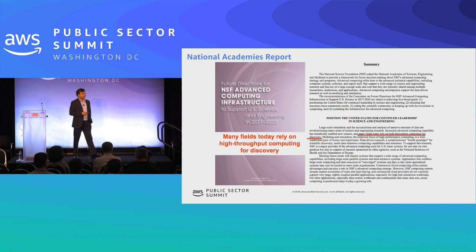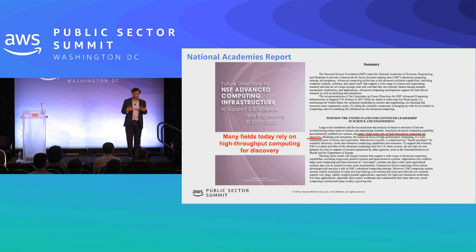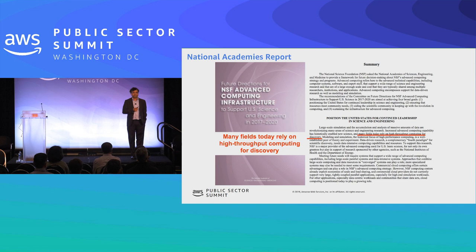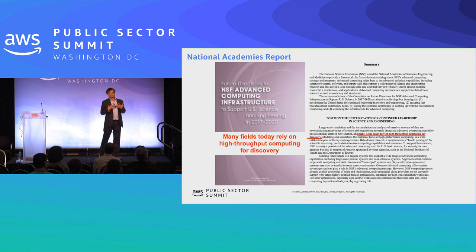If you look carefully at a recent National Academy report, you will see how science is developing. It's not about HPC. Many fields today rely on high throughput computing. The Nobel Prize in Physics for Higgs Boson was done using high throughput computing. The Nobel Prize for gravitational waves, done in the last two years, also used high throughput computing. So the bulk of the work one can still do in science with high throughput computing.